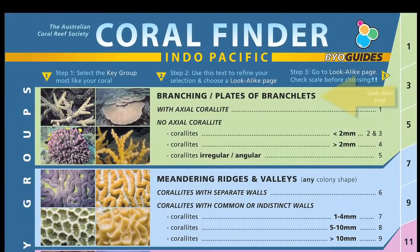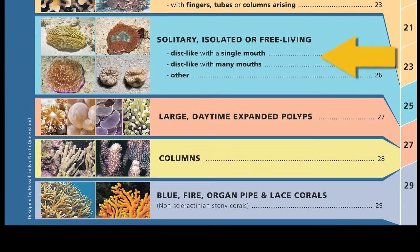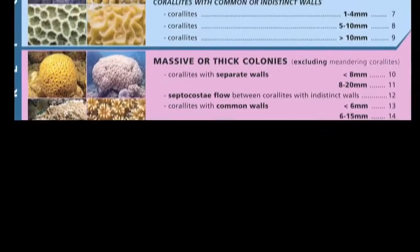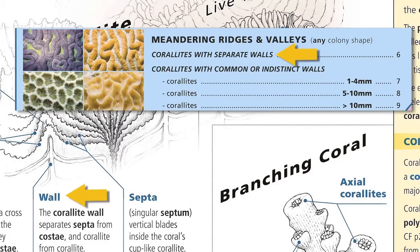For example, corals that are branching, or corals that have meandering valleys on their surface. Other key groups are based on the way the coral lives — for example, whether it is attached to the bottom or not, or whether it has large polyps expanded during the day. The key uses simple visuals and keeps text to a minimum. When text is used, it is limited to plain language and the few key terms in blue that you learned from the earlier diagram.